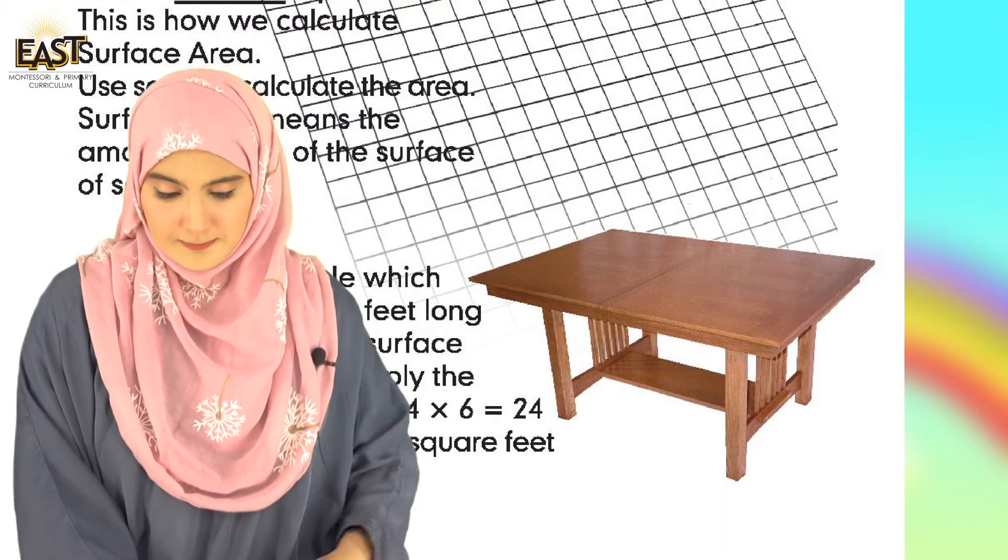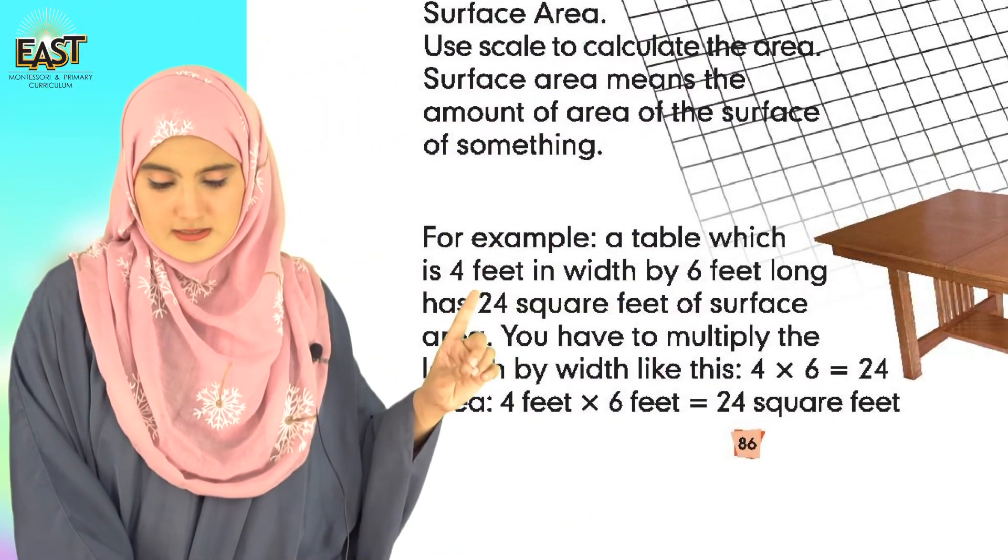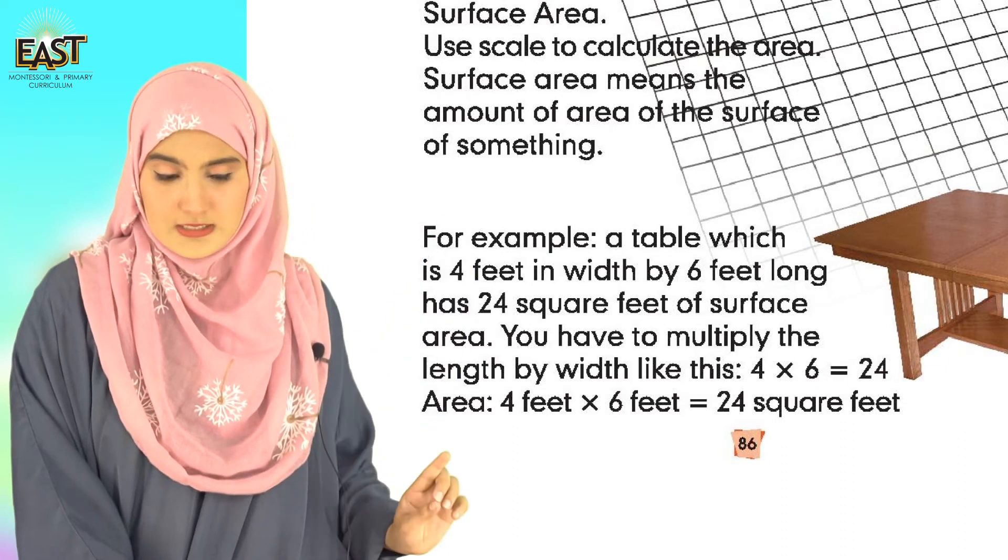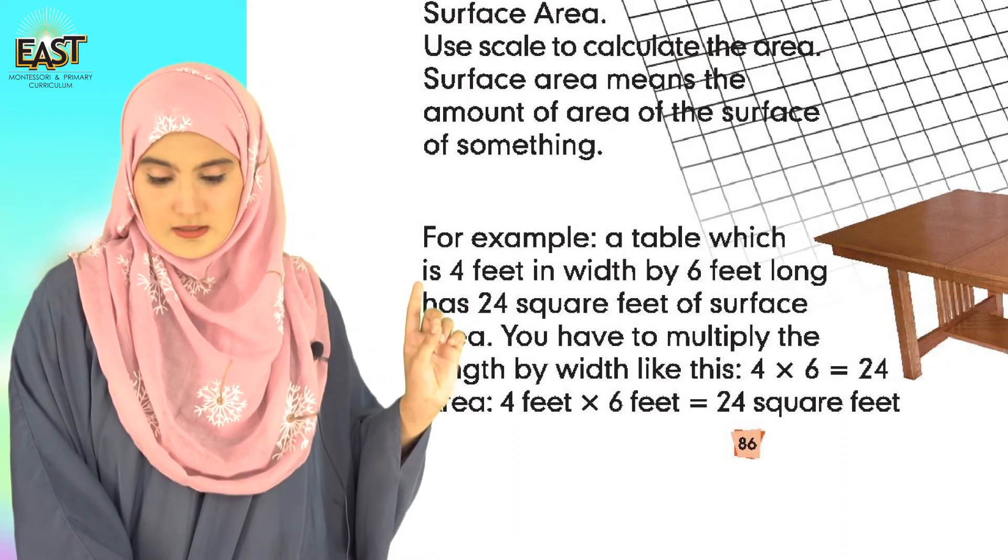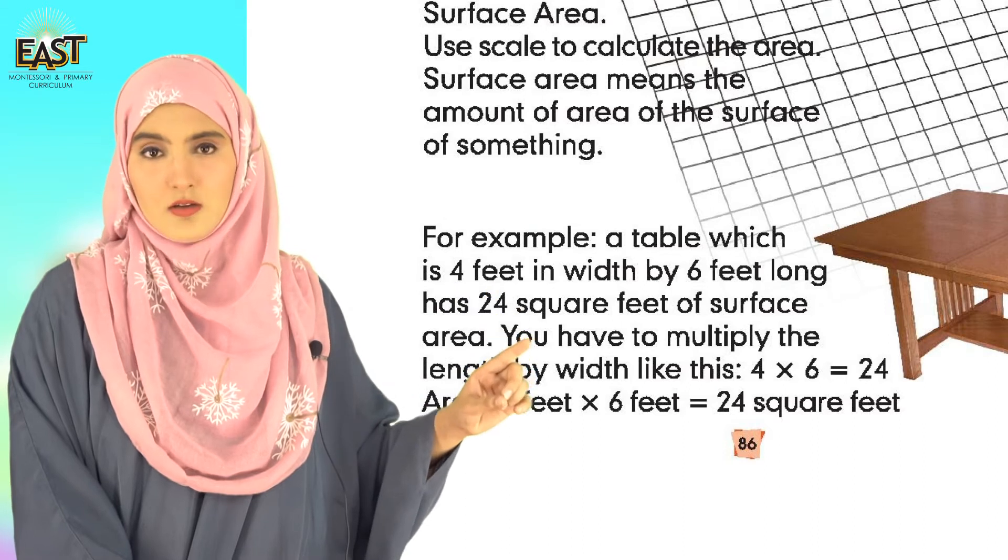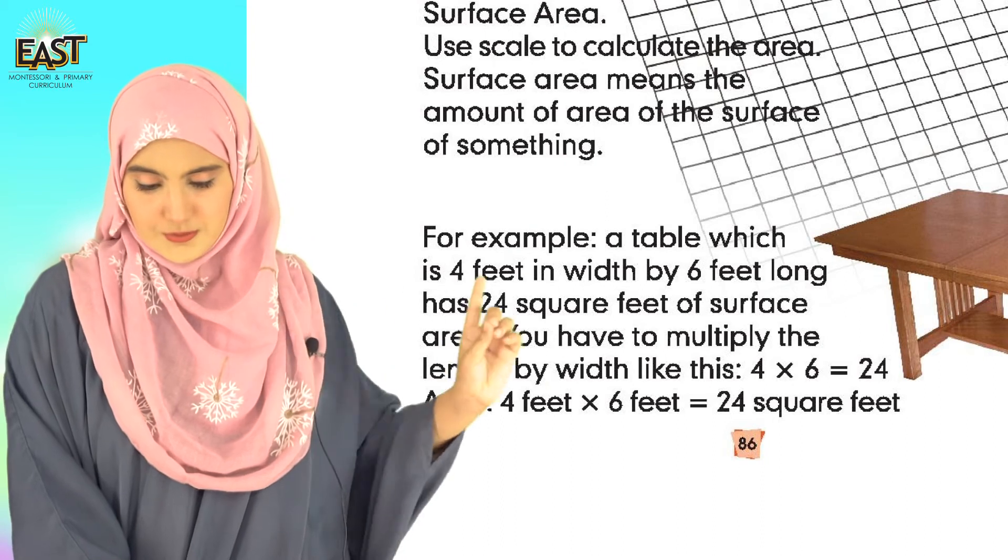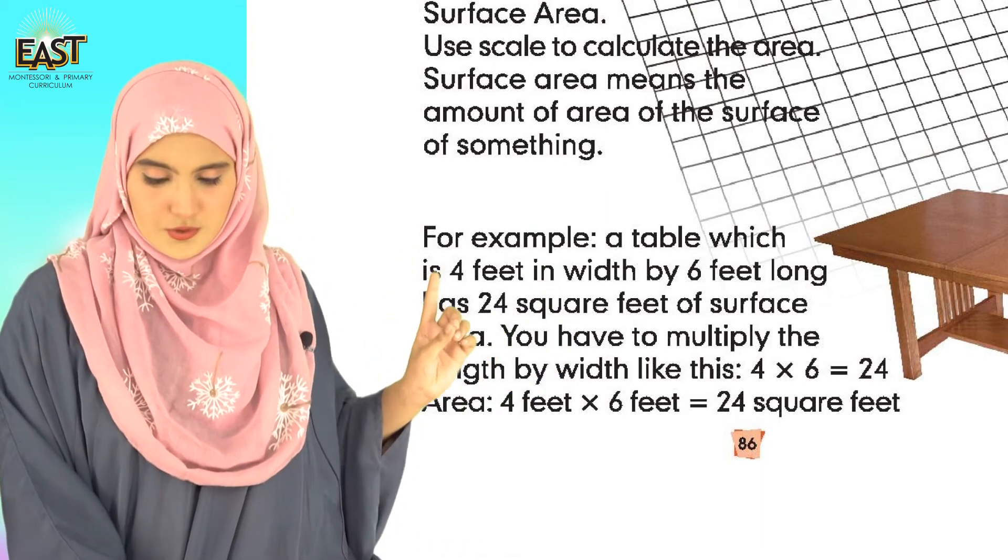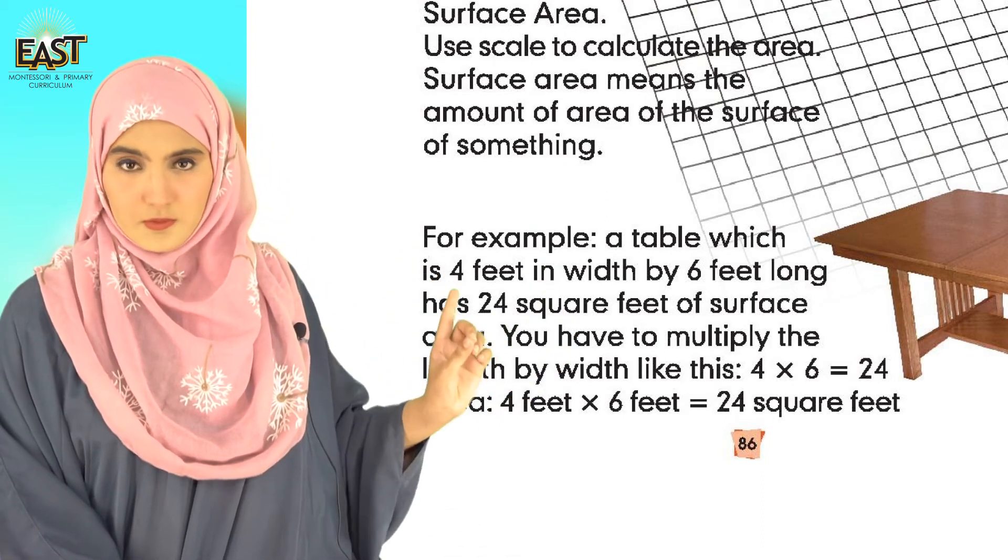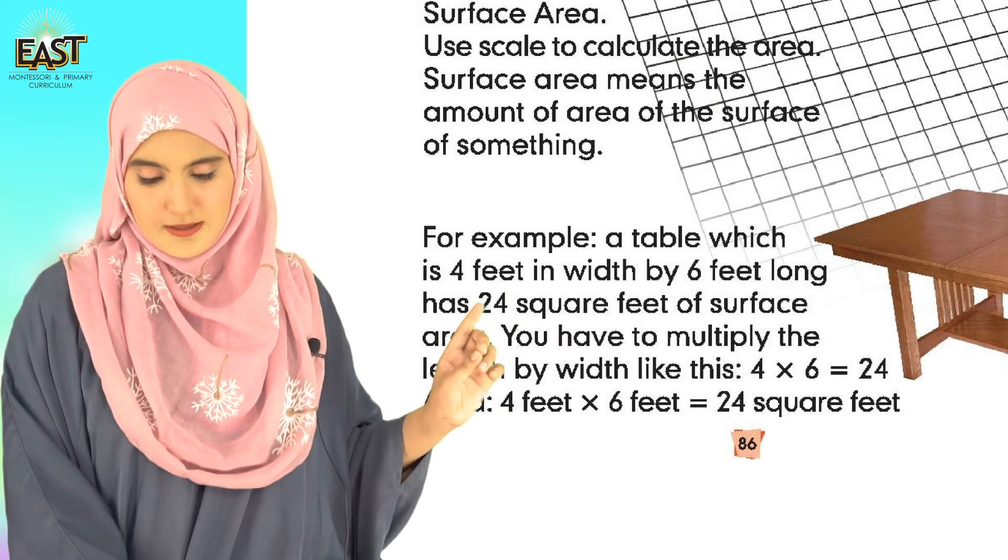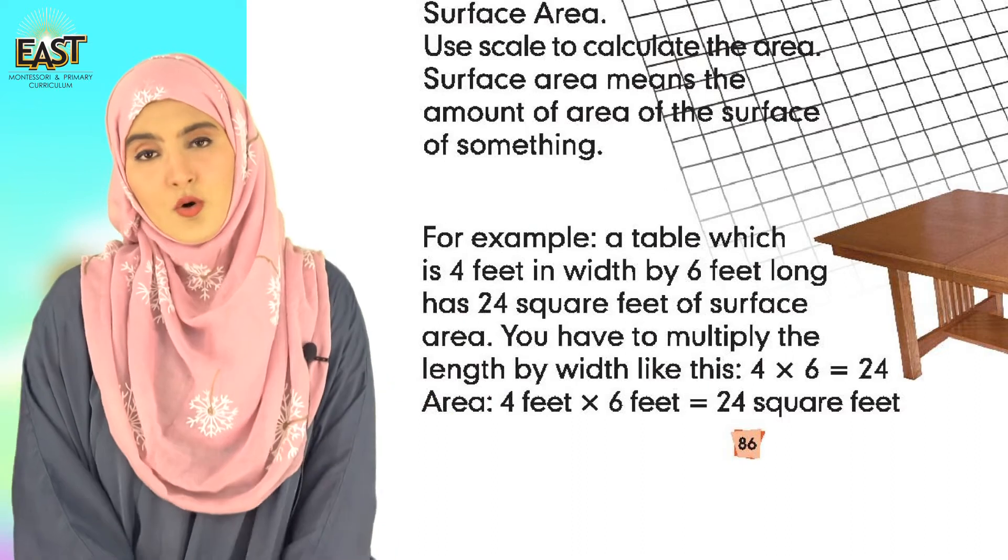For example, a table which is four feet in width and six feet long. Four feet width hogi or six feet long. You have to multiply the length by width like four times six is equals to twenty four.